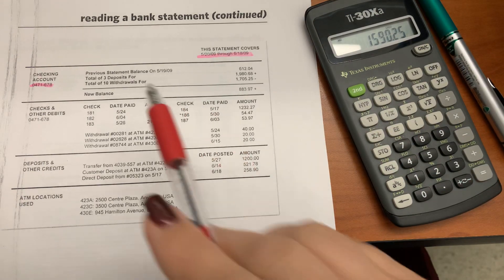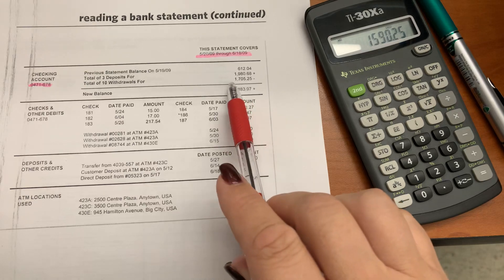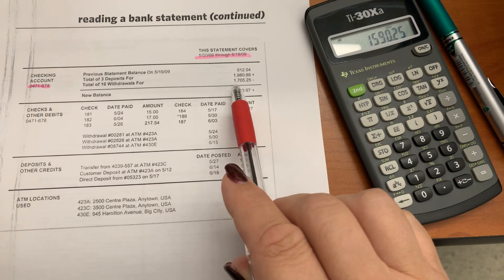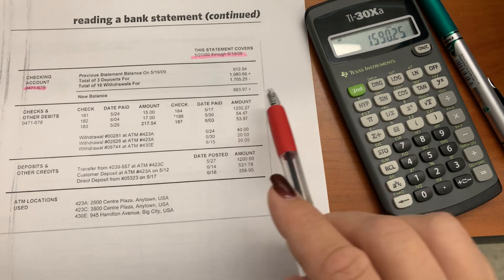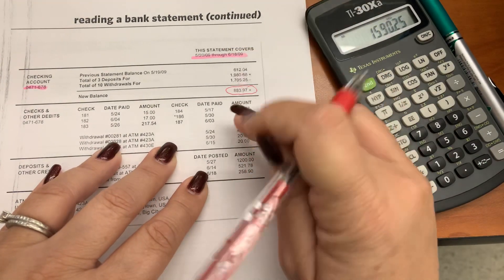There were a total of 10 withdrawals. The amount was $1,705.25. The new balance on the account is listed right here. It's $883.97.